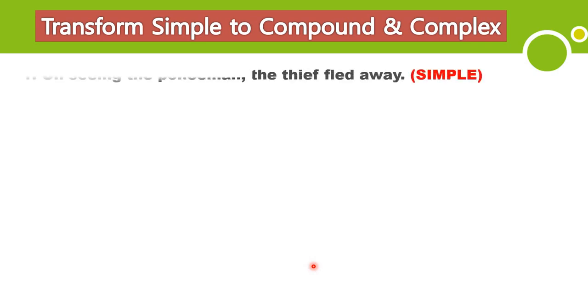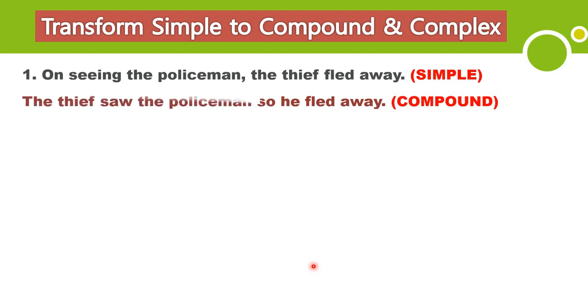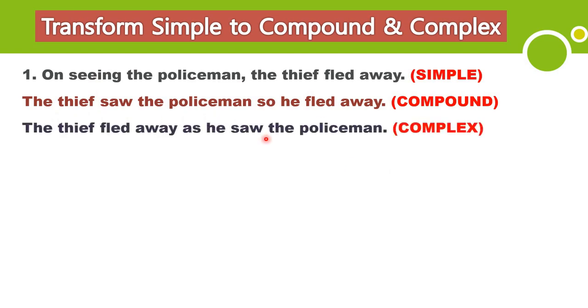Let's start transforming simple to compound. Simple: 'On seeing the policeman, the thief fled away.' Compound: 'The thief saw the policeman, so he fled away' — using the coordinating conjunction 'so.' Complex: 'The thief fled away as he saw the policeman.' Here 'as he saw the policeman' answers why he fled — it is an adverb clause of reason. So it is a complex sentence.